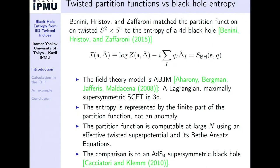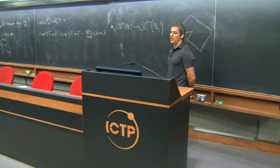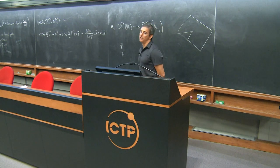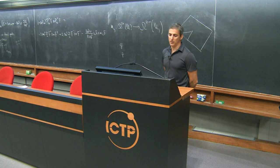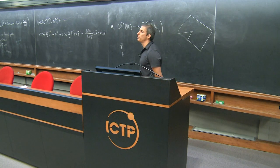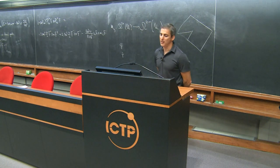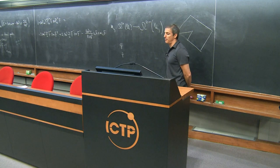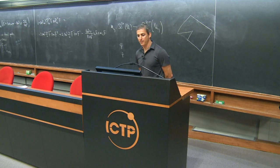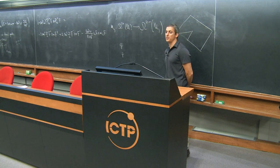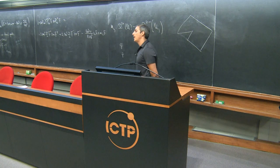The field theory model in three dimensions is ABJM, which is a Lagrangian maximally symmetric superconformal field theory in 3D. The entropy they calculate is represented by the finite part of the partition function — it isn't an anomaly in the field theory. The partition function is computable at large N on the field theory side using the effective twisted superpotential if you reduce one dimension back to two dimensions, the Bethe-Ansatz equations, and some large N techniques. The comparison was made to an ADS4 supersymmetric black hole, and it worked out.